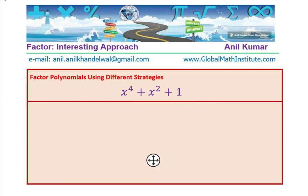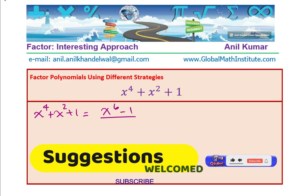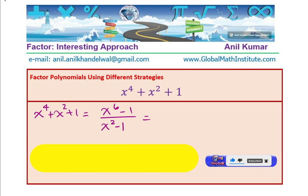So, let me rewrite this. We have x to the power of 4 plus x square plus 1 equals x to the power of 6 minus 1 over x square minus 1. And now, we can factor x to the power of 6 minus 1 and x square minus 1 to get our result, perfect?